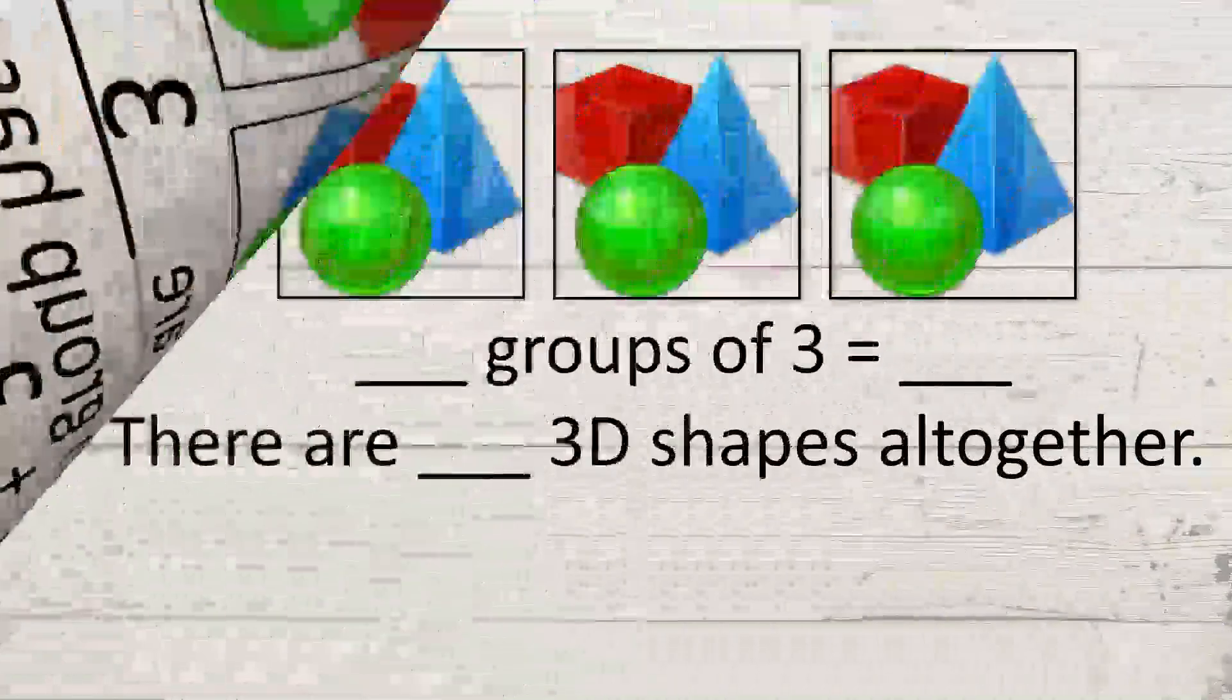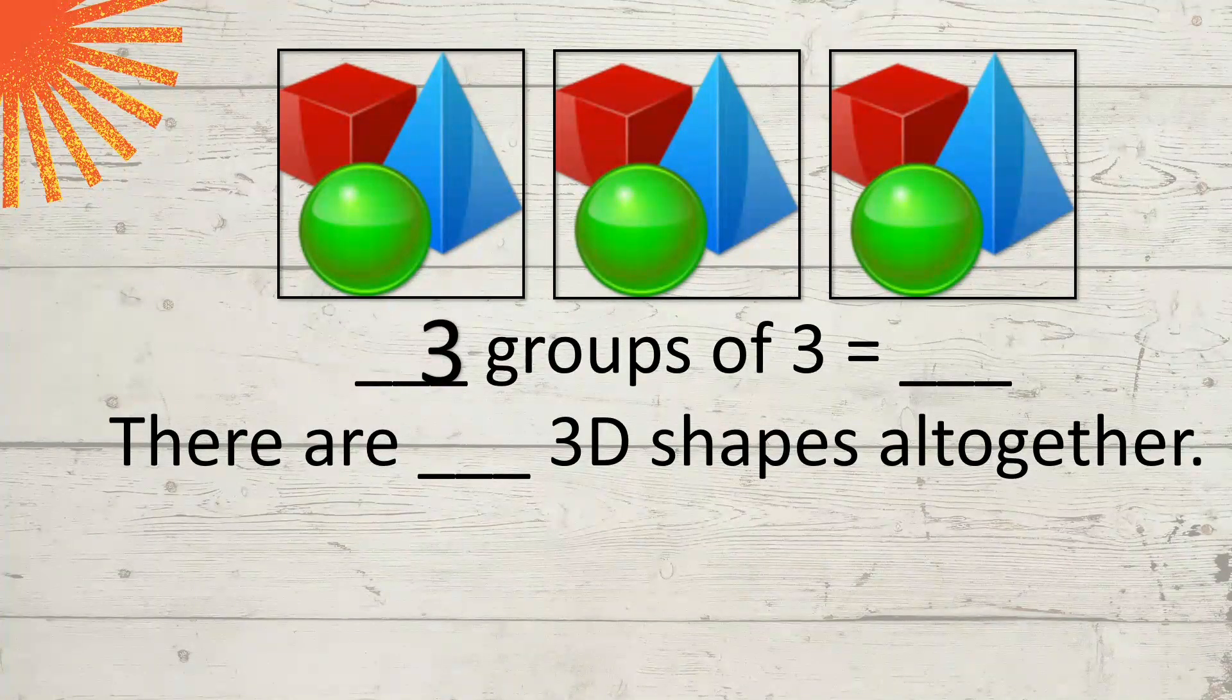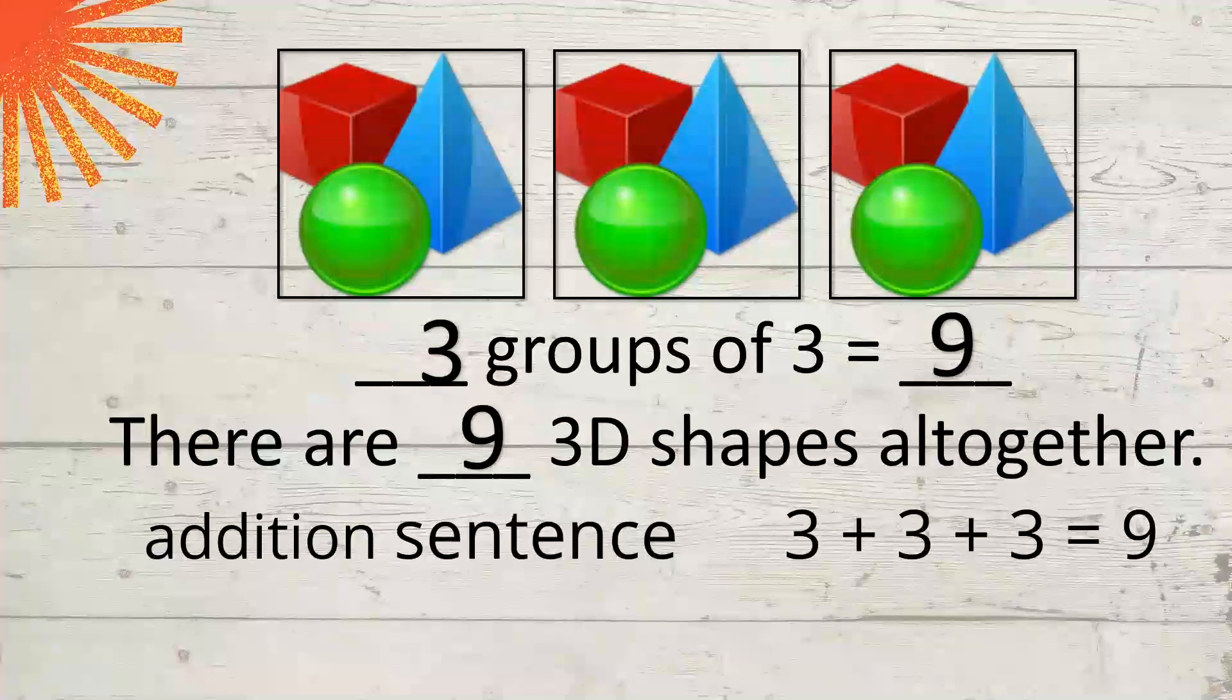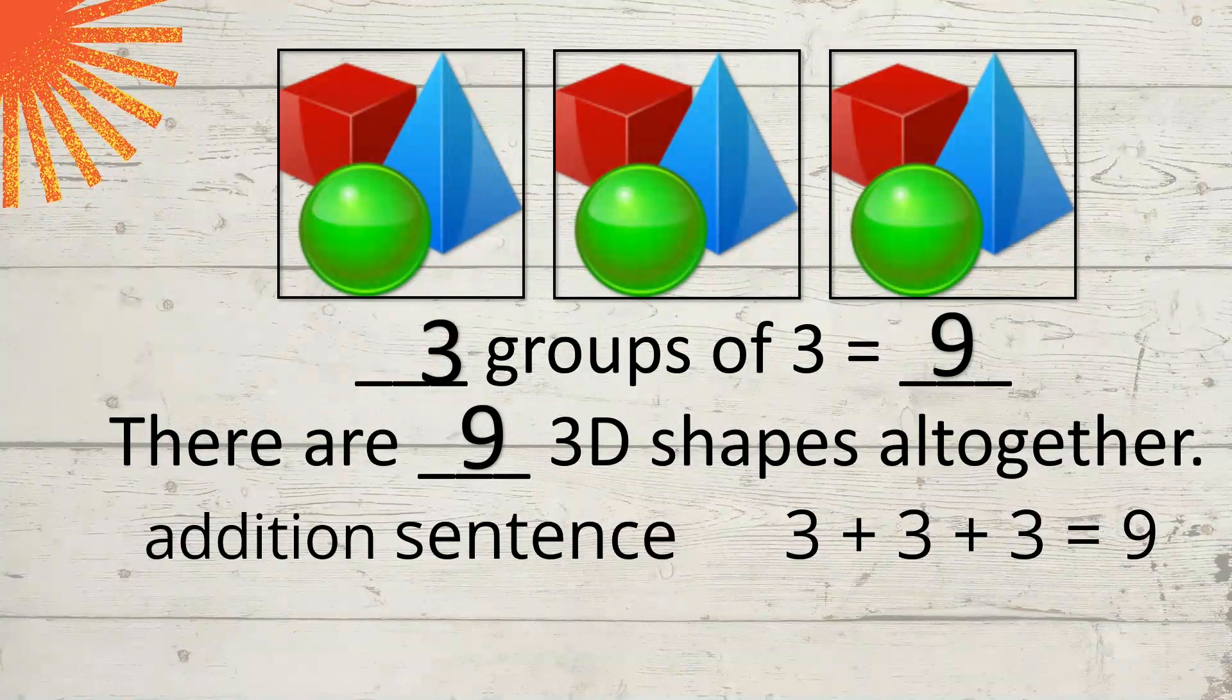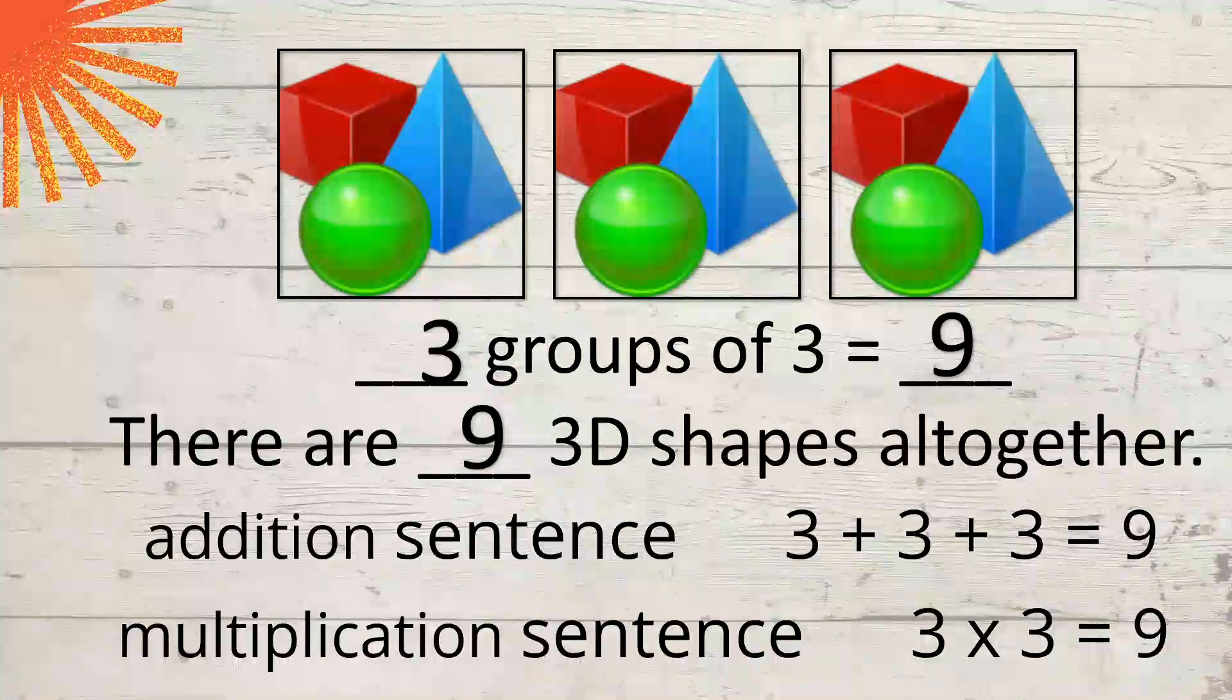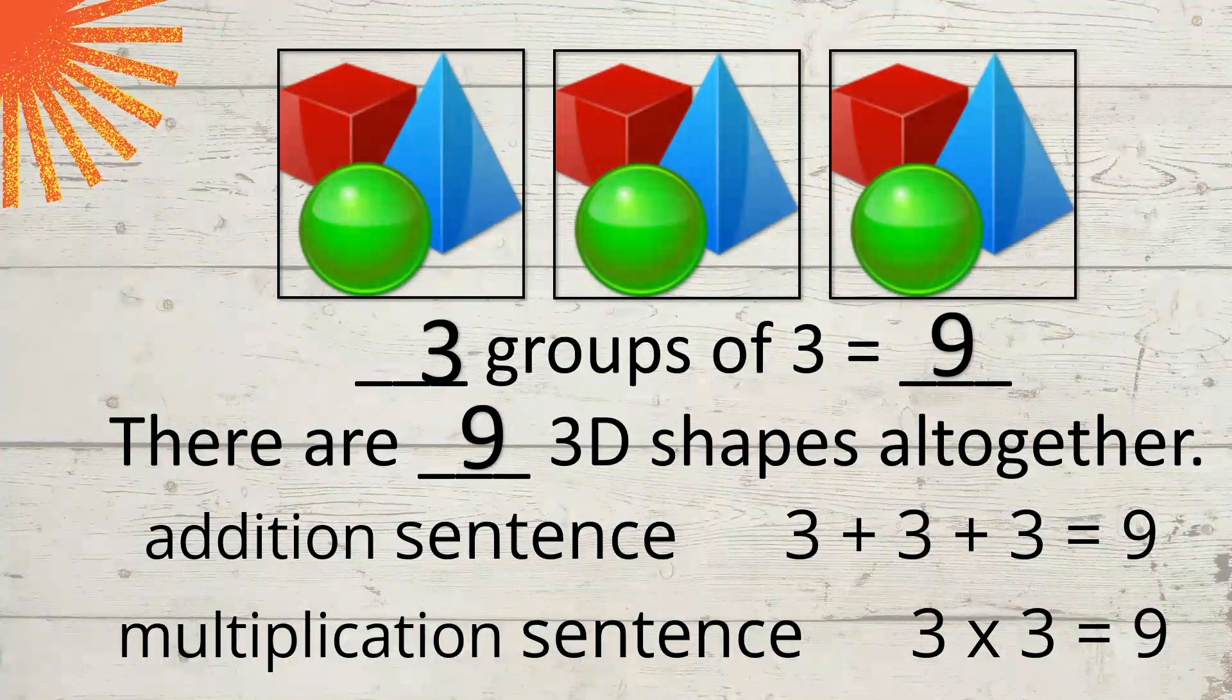Very good. Now let's complete these two. Blank groups of 3. How many groups? 3 groups of 3 and the total is 9. So there are 9 3D shapes all together. So our addition sentence, 3 plus 3 plus 3 equals 9. And our multiplication sentence? Correct! 3 times 3 equals 9. Again, 3 because there are 3 groups. And then times 3 because there are 3 objects. There are 3 3D shapes in each group. And the total is 9.